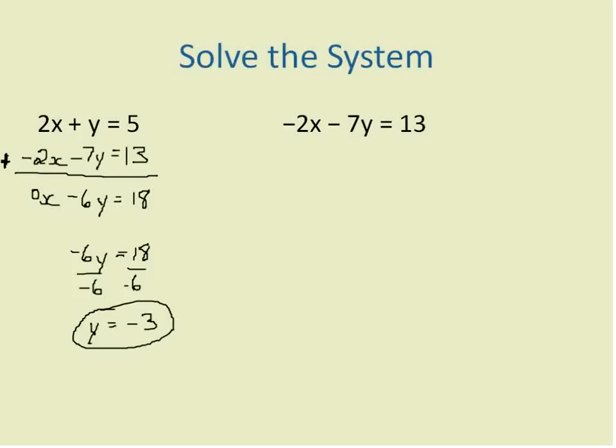I'm going to pick this equation because it looks easier. 2x plus negative 3 is equal to 5. I'm going to change that to mean 2x minus 3 is equal to 5. I'll add 3 to both sides of this equation, keeping it balanced.